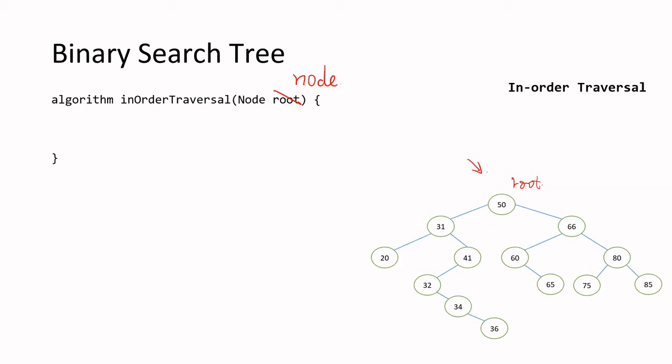We should consider edge cases first. If the node we're using is a leaf node — meaning it doesn't have any children — then we can just return. If a node doesn't have a child, there's no need to move on.